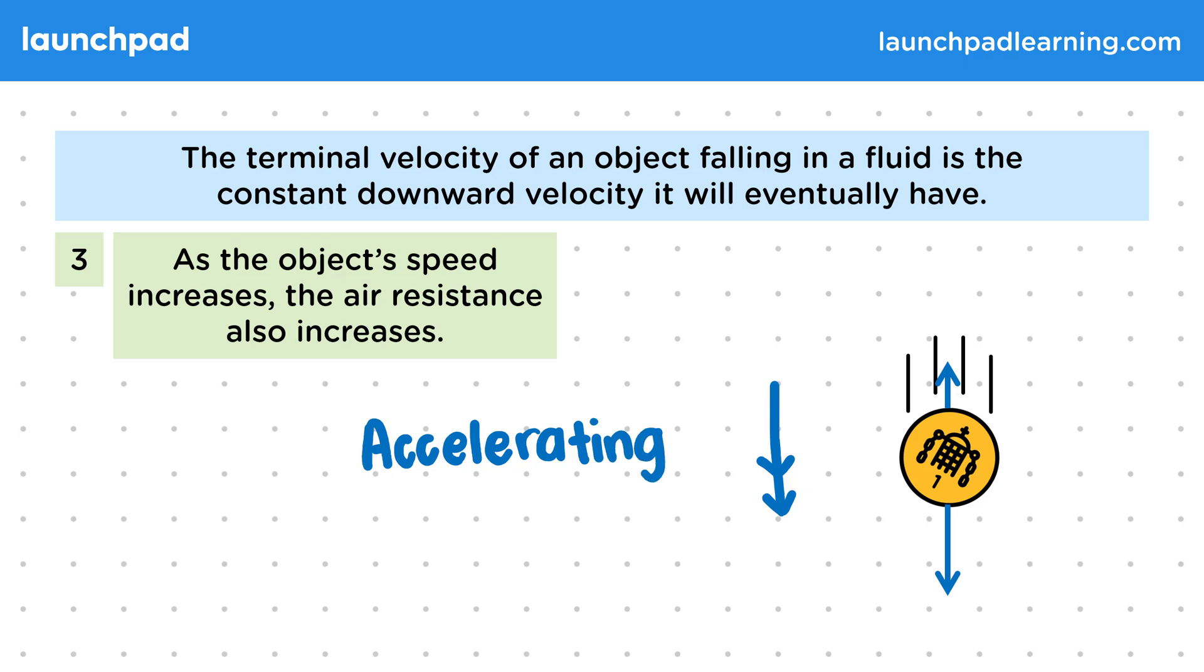The amount of air resistance the coin experiences depends on this speed. This is because there will be more collisions with air molecules as the coin moves faster through them. Because the coin is moving faster from acceleration, it will experience a larger air resistance. This air resistance will continue to increase so long as the coin's speed increases.